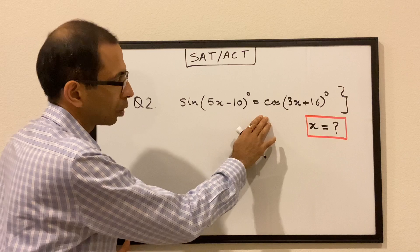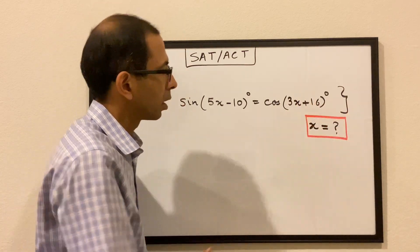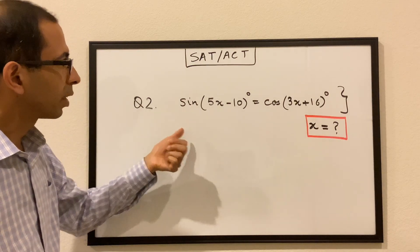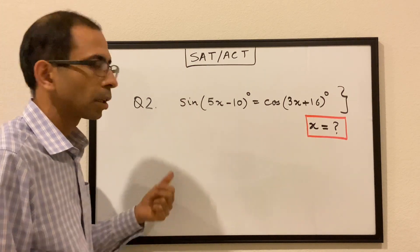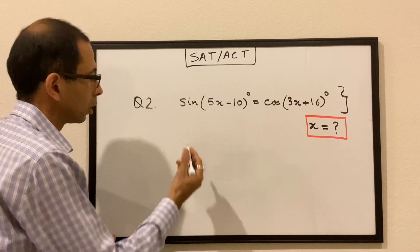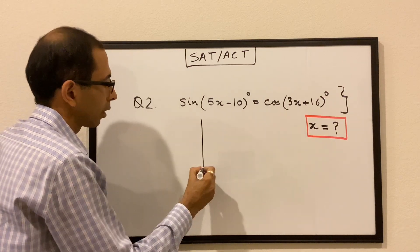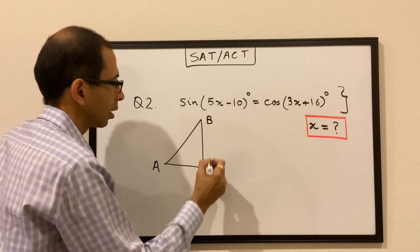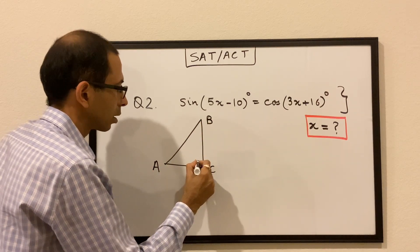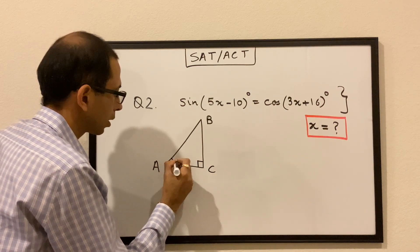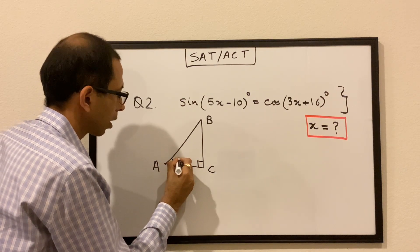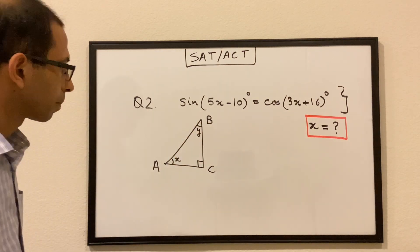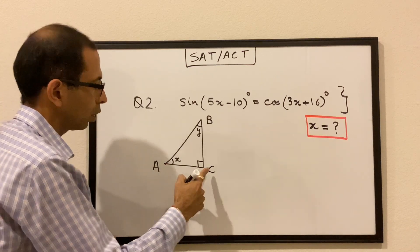Question number two: sine of (5x − 10°) = cos of (3x + 16°), and we have to find the value of x. Before we get started, let's take a quick look at a right angle triangle. Let's say we have a right angle triangle ABC with the 90 degrees here, this angle is x, and this angle is y. Now sine of x...